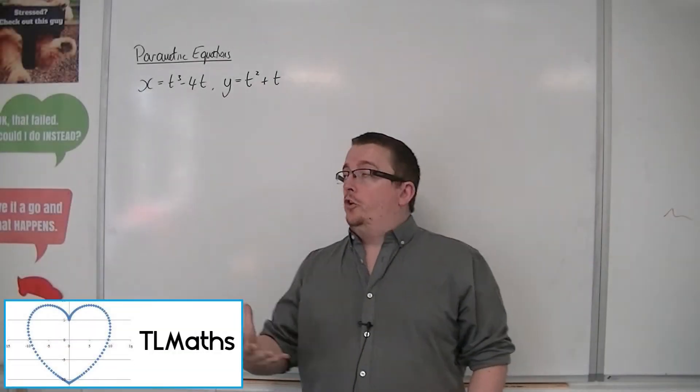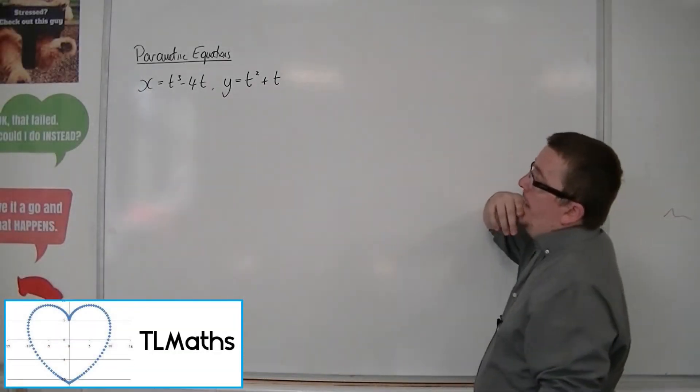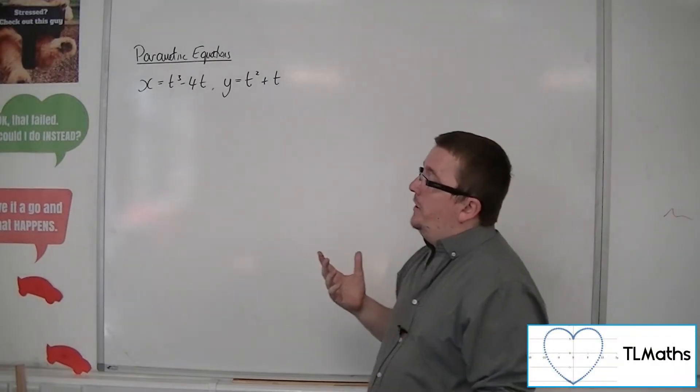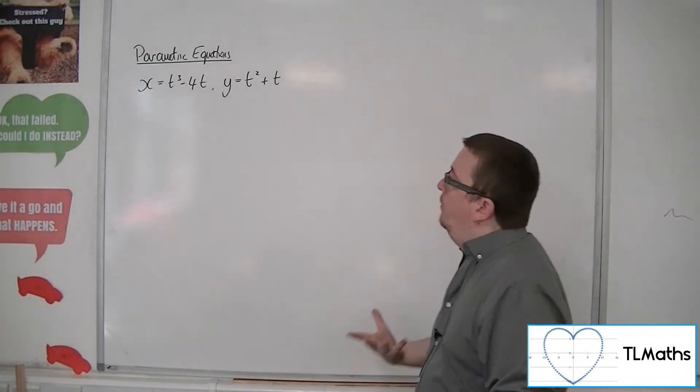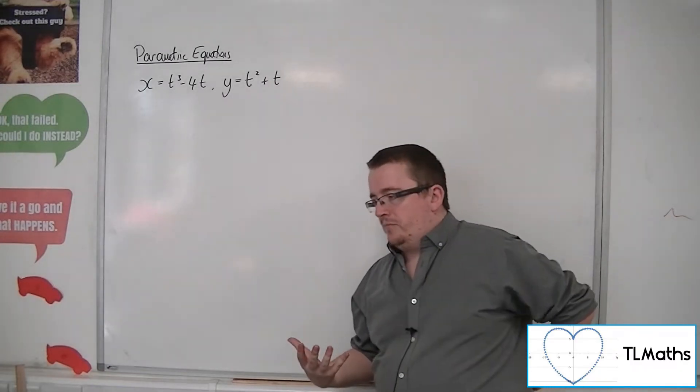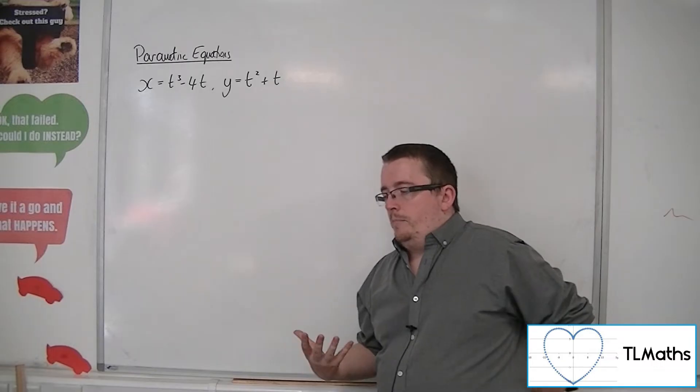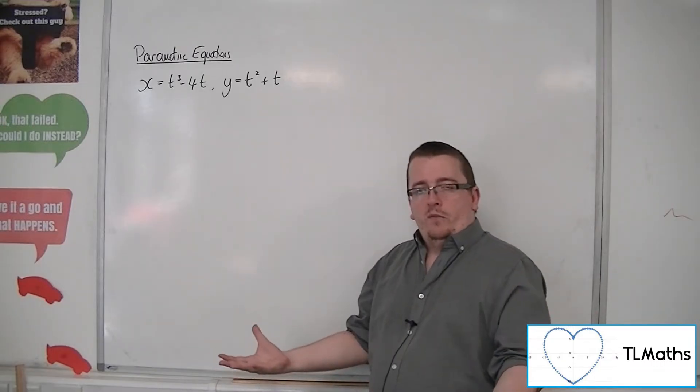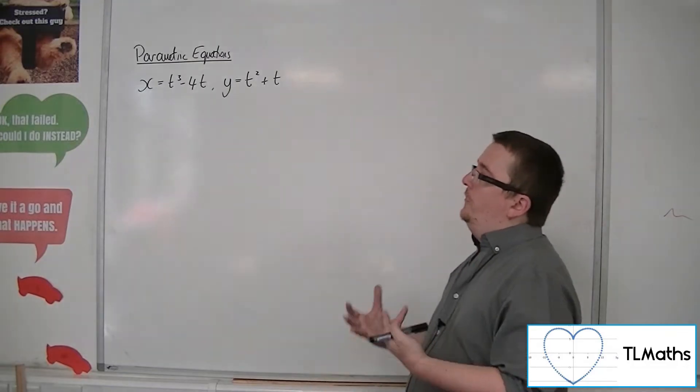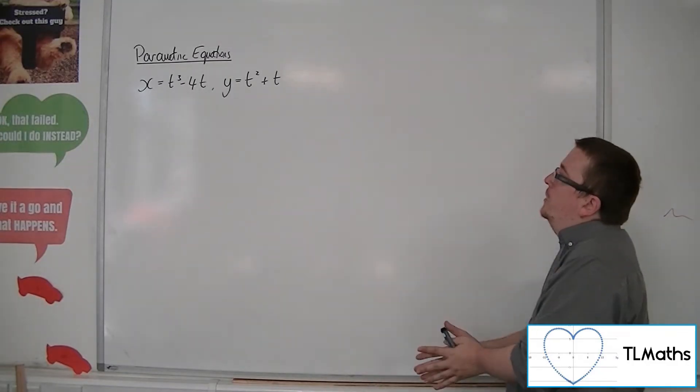So in the previous video, we solved a problem involving x equals t cubed minus 4t and y equals t squared plus t. It got me thinking about what does this curve actually look like? Because the only other parametric equation curve that we've looked at so far was just a parabola on its side. So let's see what a weird one could actually look like.